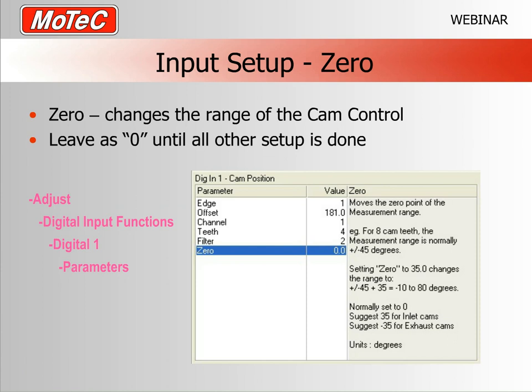Input Zero - for now just leave that at zero. This is something I can't really explain well until we've gone through the output setup and have the cams moving around. For the purposes of today, just leave it at zero - we're just getting the cam position set up at the moment.